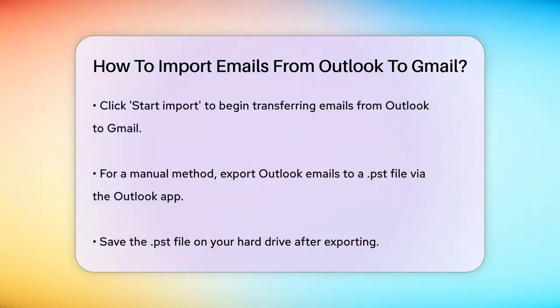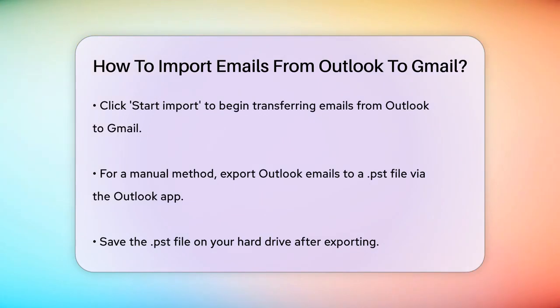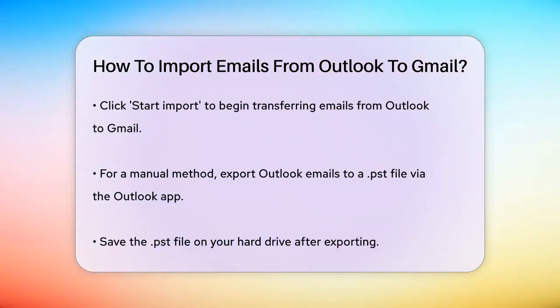Next, enable IMAP in your Gmail account and add your Gmail account to the Outlook app. Go to File, Info, Add Account, and sign in to your Gmail account.